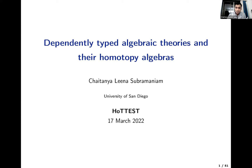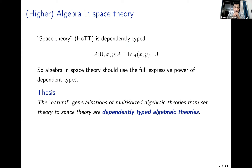I don't think I need to convince this audience that the best candidate today for a formal space theory is HoTT. And of course, HoTT is expressed using Martin-Löf's language of dependent types. The identity type, just to define it, needs a notion of type dependency. So when doing algebra formally in HoTT, it's reasonable to ask that we be able to use the full expressive power of dependent types.